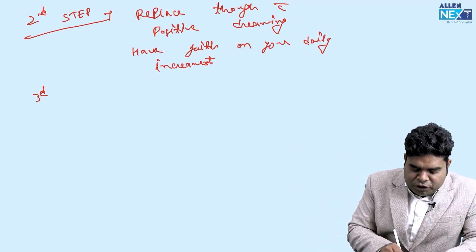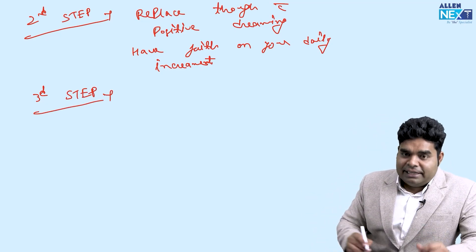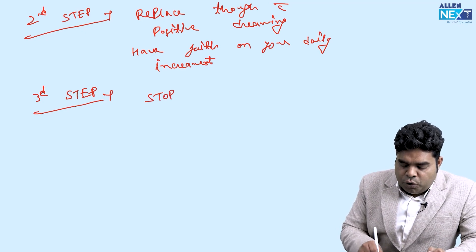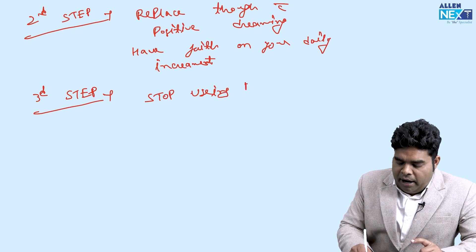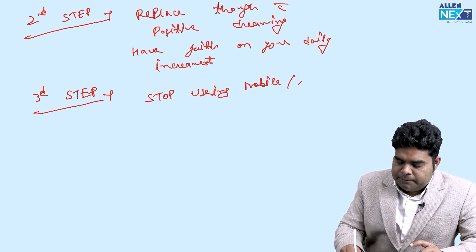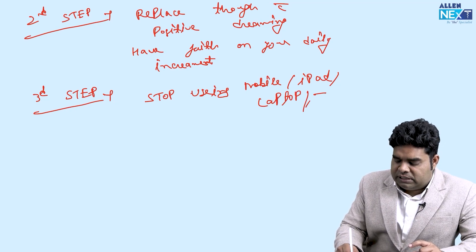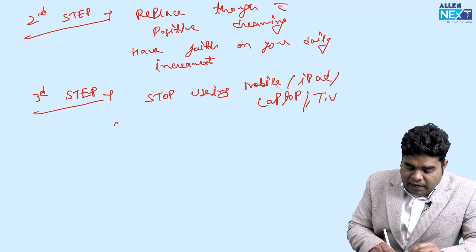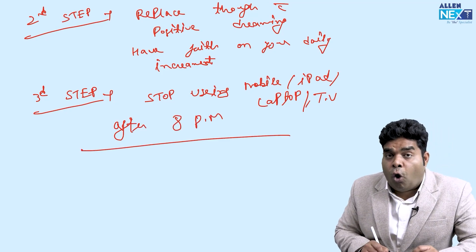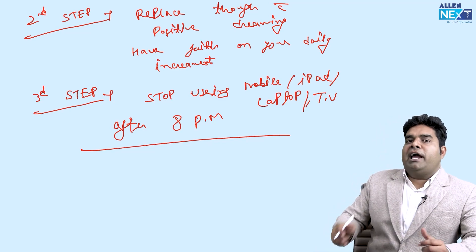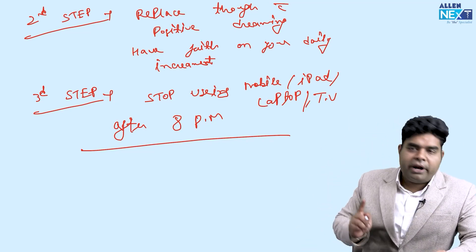The third step which we all ignore to do, thinking we all know that but we don't do that, is that we have to make sure that we will not use mobile or iPad or laptop or TV or anything which is stimulating our retina after 8 PM. If I have to call my family, if I have to call a friend, if I have to see some knowledge or information online, I will see it before 8 PM.